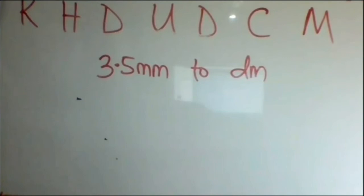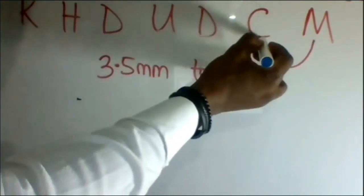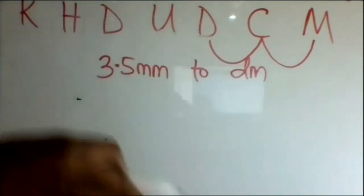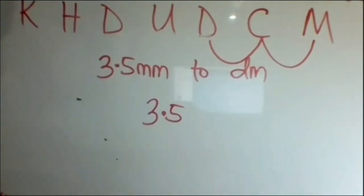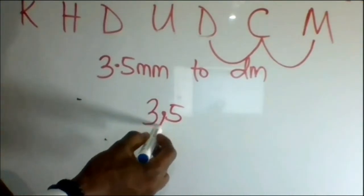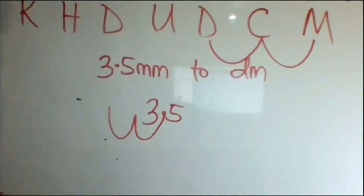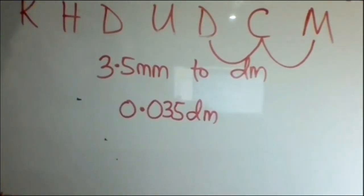Let's also convert 3.5 millimeters to decimeters. From millimeter to decimeters, we move once, twice. So, in 3.5 millimeters, the point moves once, twice to get decimeters. Our answer is therefore 0.035 decimeters.